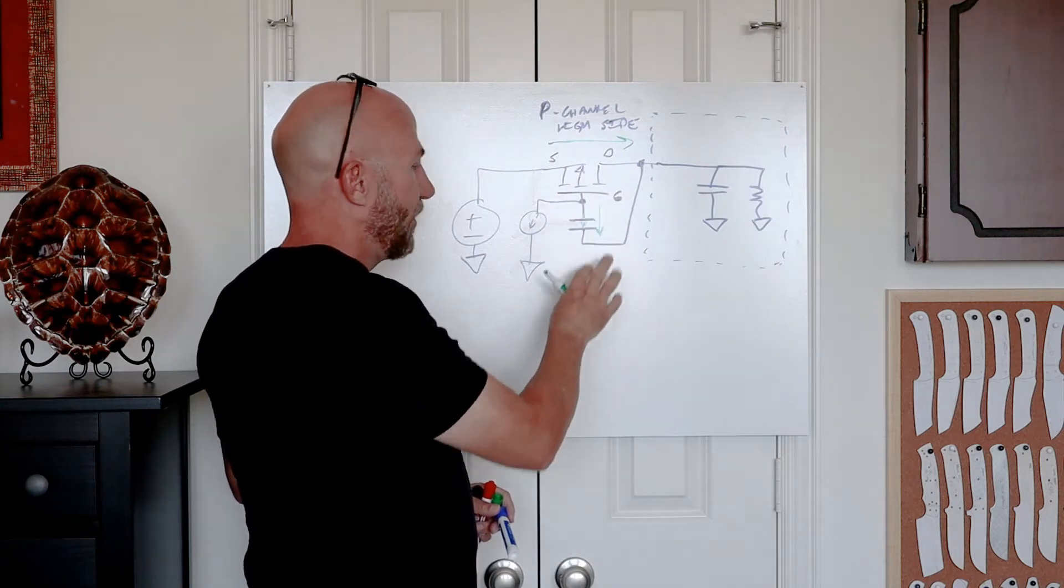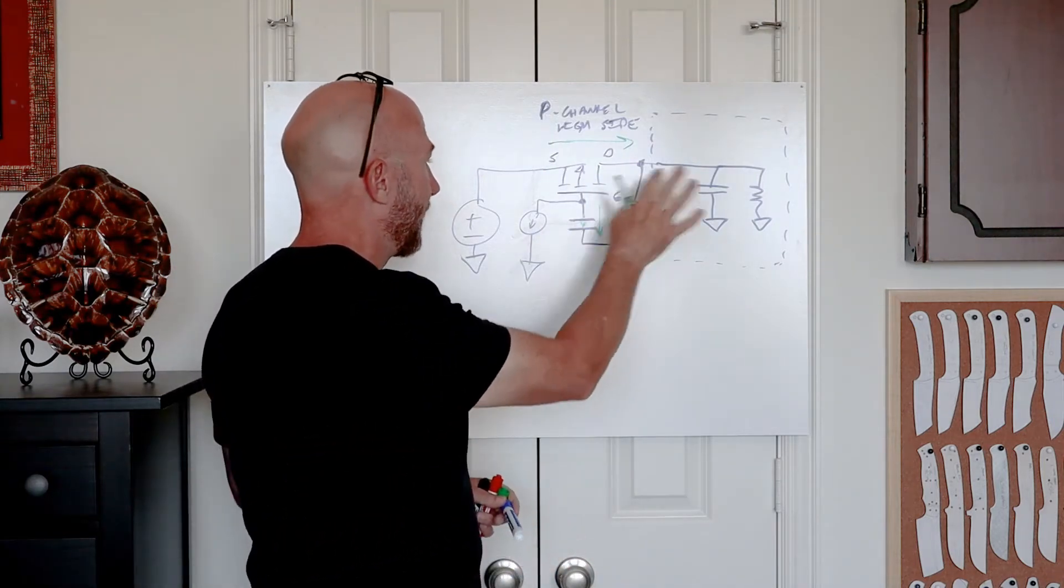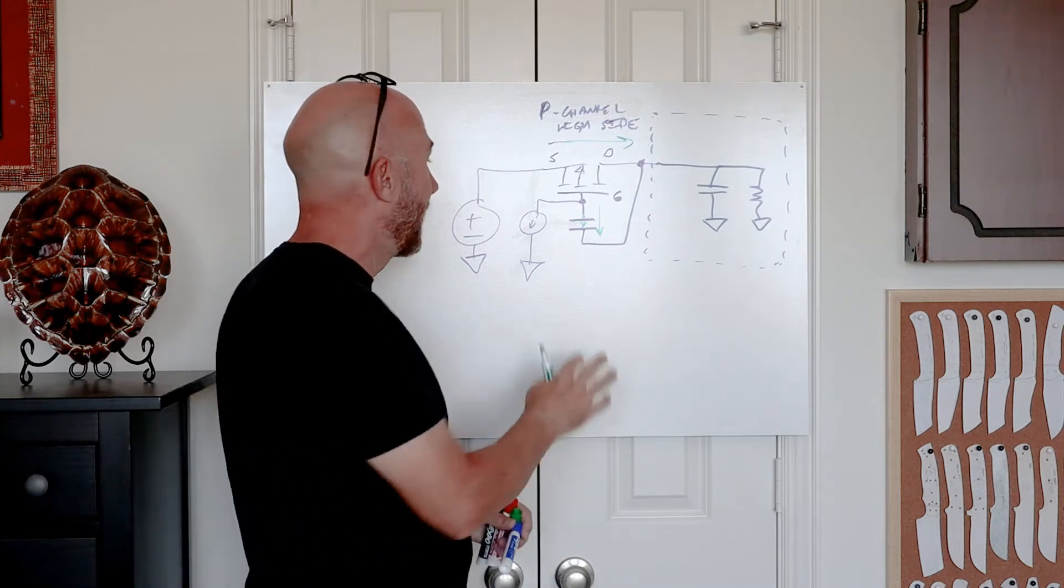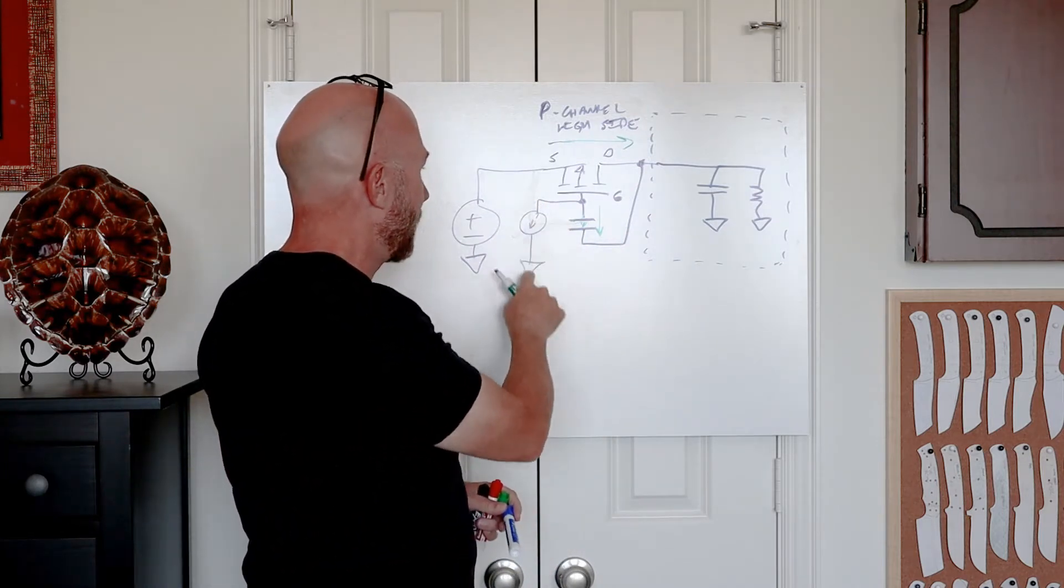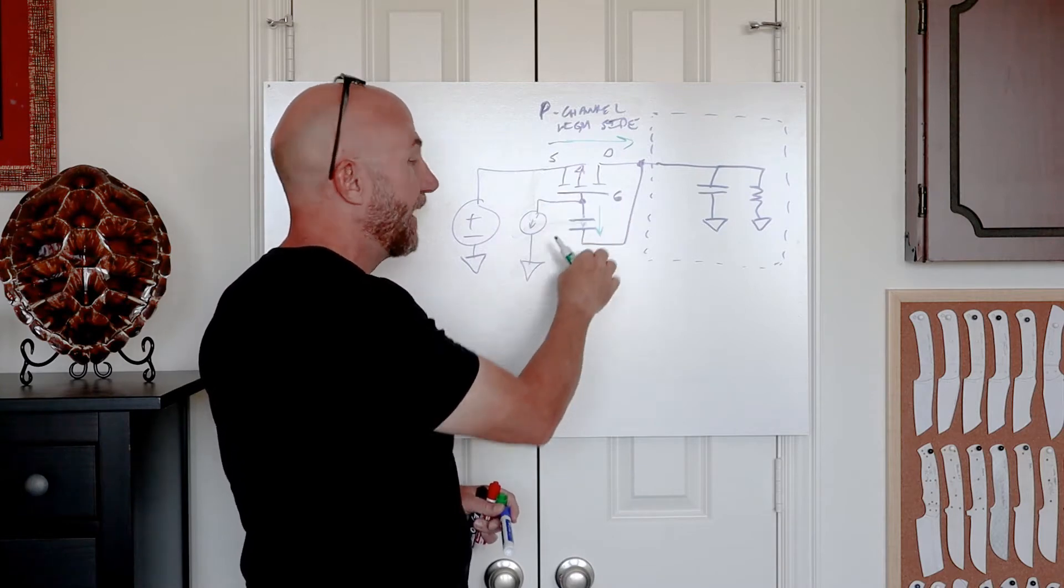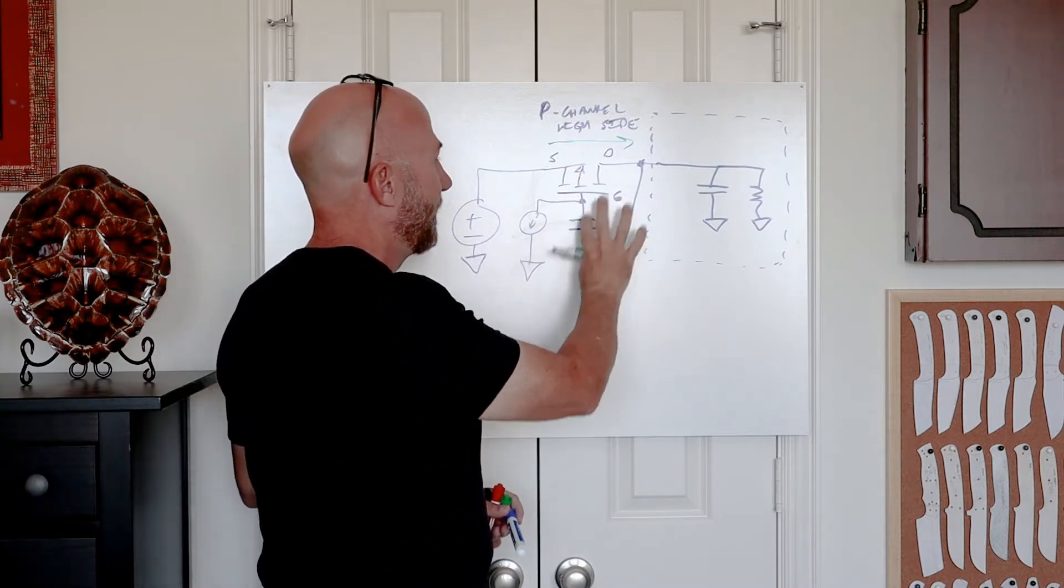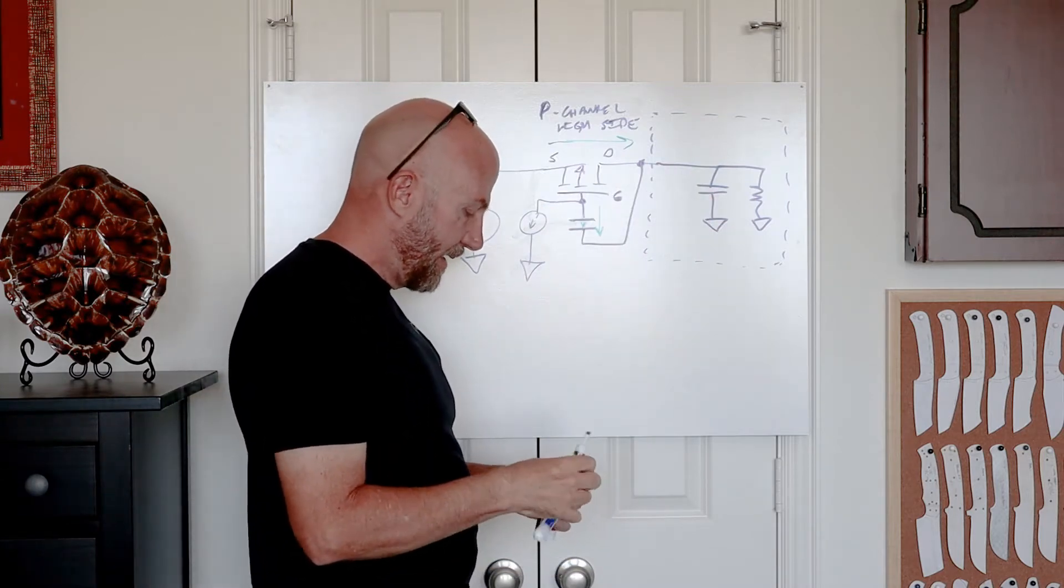And so this gives you, again, an i equals c dv dt kind of characteristic to turn on the output. And the nice thing about this is, like I say, we don't have to have a charge pump. We can basically just have a current source that is pulling low on the gate of the FET. And we've got a nice control to turn on.